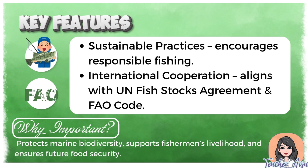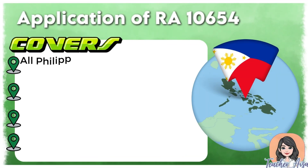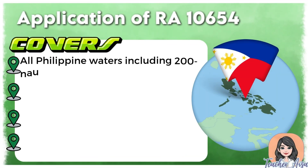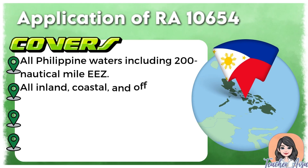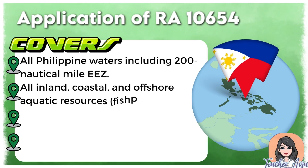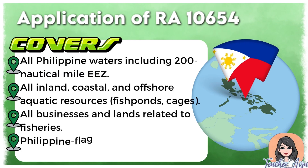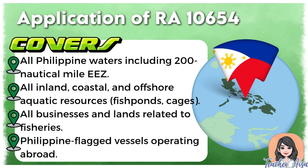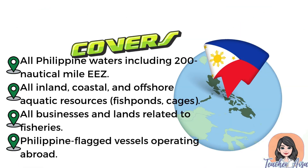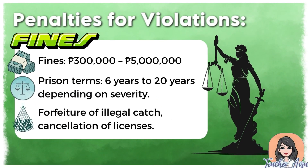Republic Act No. 10654 has broad coverage to ensure proper management of fisheries. It applies to all Philippine waters, including the 200-nautical-mile Exclusive Economic Zone (EEZ), and covers inland, coastal, and offshore resources such as lakes, rivers, fishponds, and cages. The law also includes all businesses and lands related to fisheries, as well as Philippine-flagged vessels operating abroad, ensuring that both local and international fishing activities by Filipinos follow legal and sustainable practices.